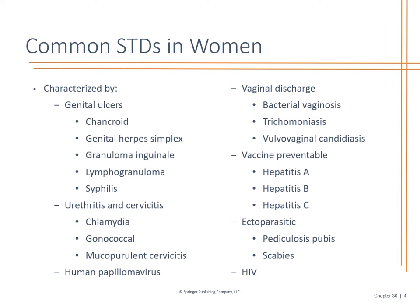Vaccine-preventable STDs include hepatitis B. Those of us in healthcare have had the Hep B series. You can also screen with an acute hepatitis panel covering hepatitis A, B, and C. When screening for STDs, look at all of these factors. It is also possible the cause is parasitic — doing a pelvic exam, taking a look to see if anything is present, scraping and sending it to be tested. And again, HIV, which is a blood test.